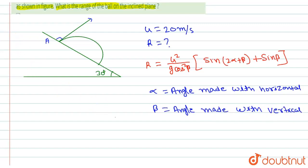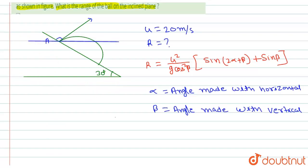Now, at point A, we have to find the angle made with the horizontal and the vertical. We can draw a parallel line, and from here we can see this angle is 30 degrees. So this is 30 degrees and this is 60 degrees. So alpha is equal to 60 degrees — the angle made with the horizontal.